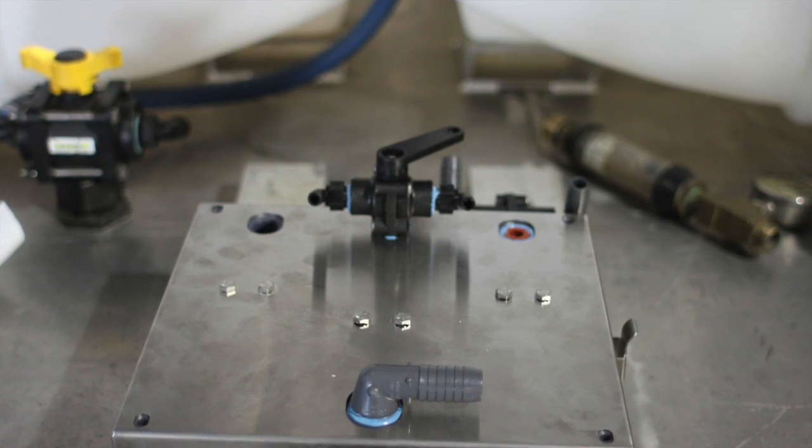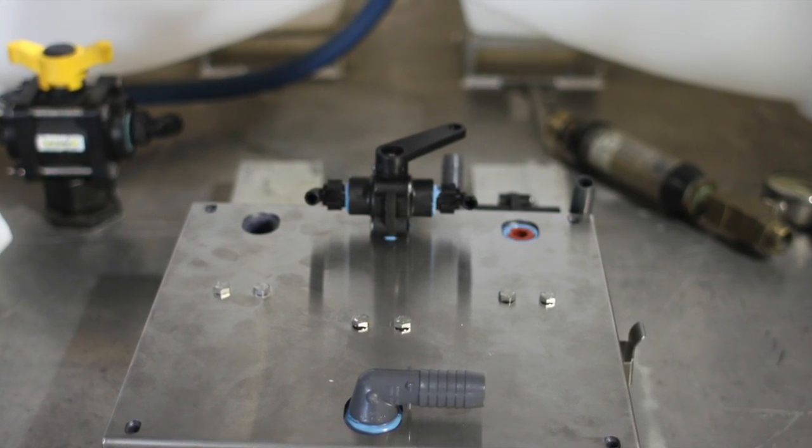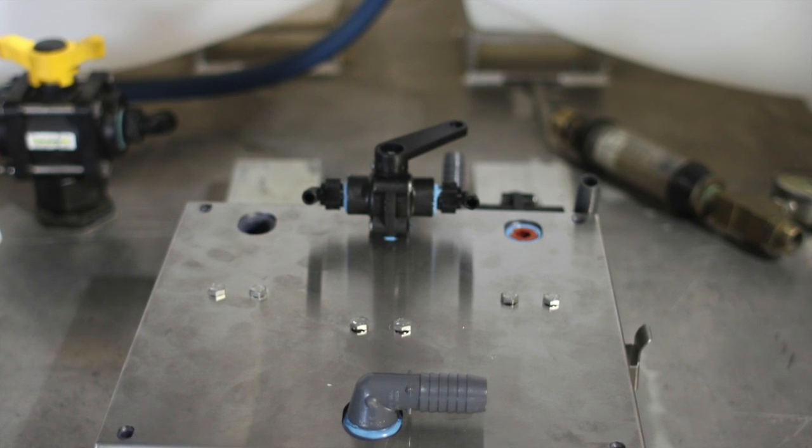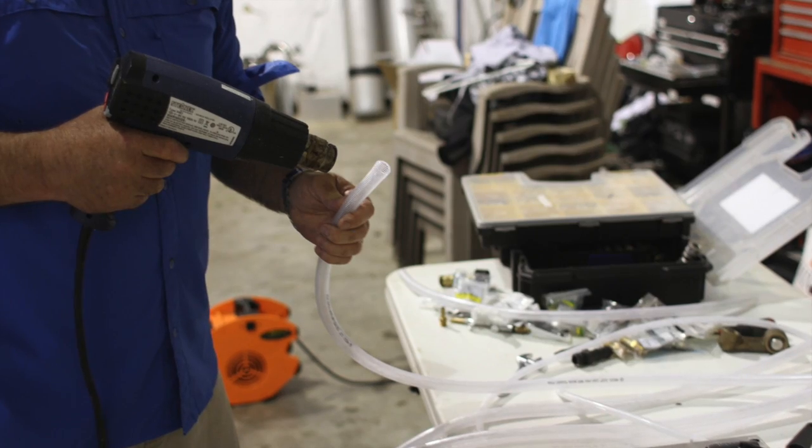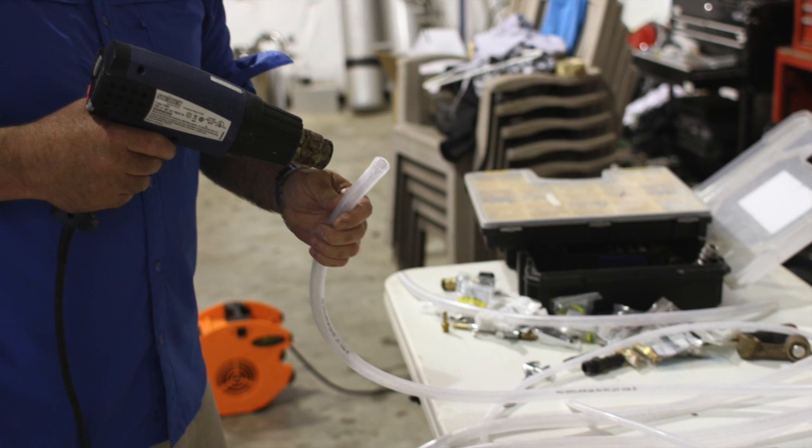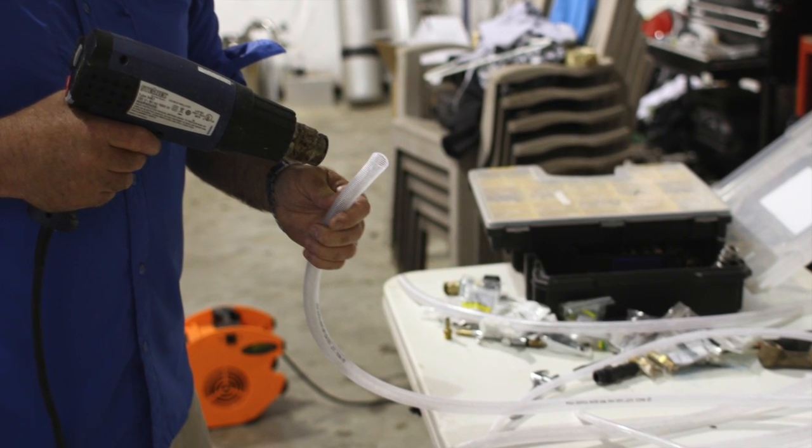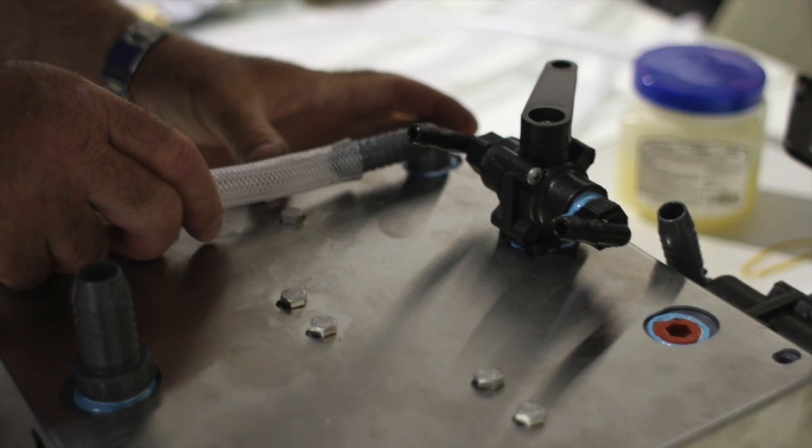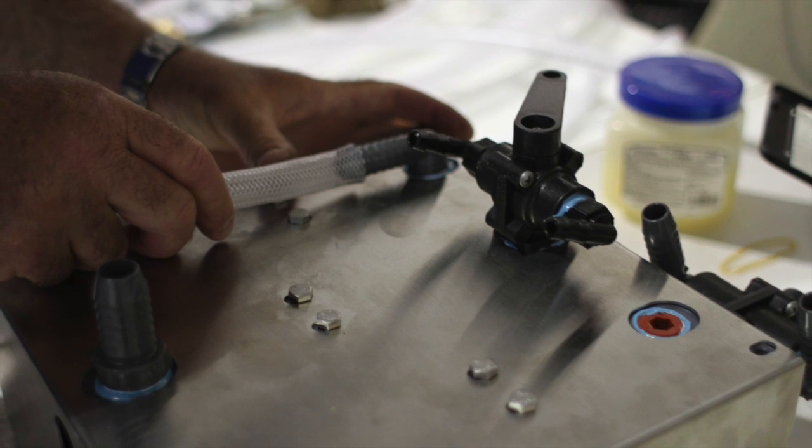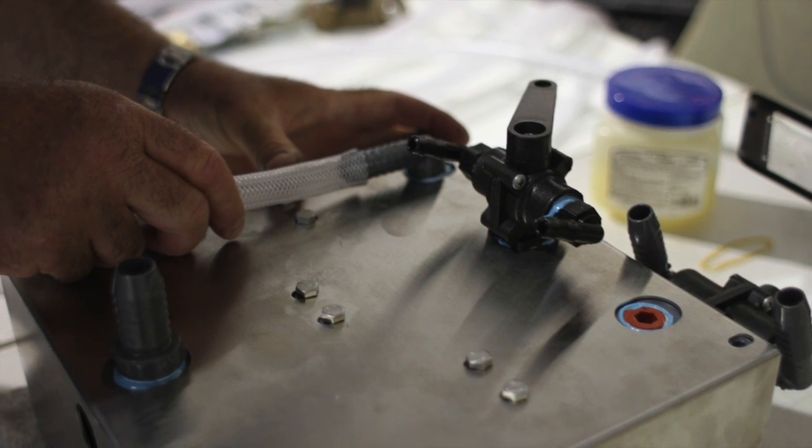After attaching your various hose barbs and valves, it's now time to attach the hoses. In this example, we're using half inch hoses. We highly recommend heating the hoses then pressing them onto the hose barbs.